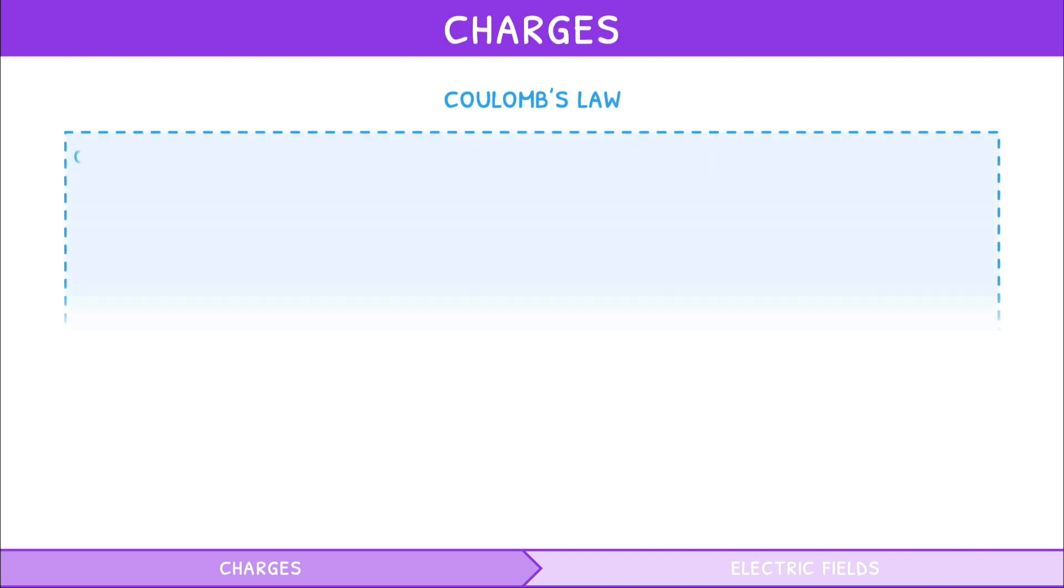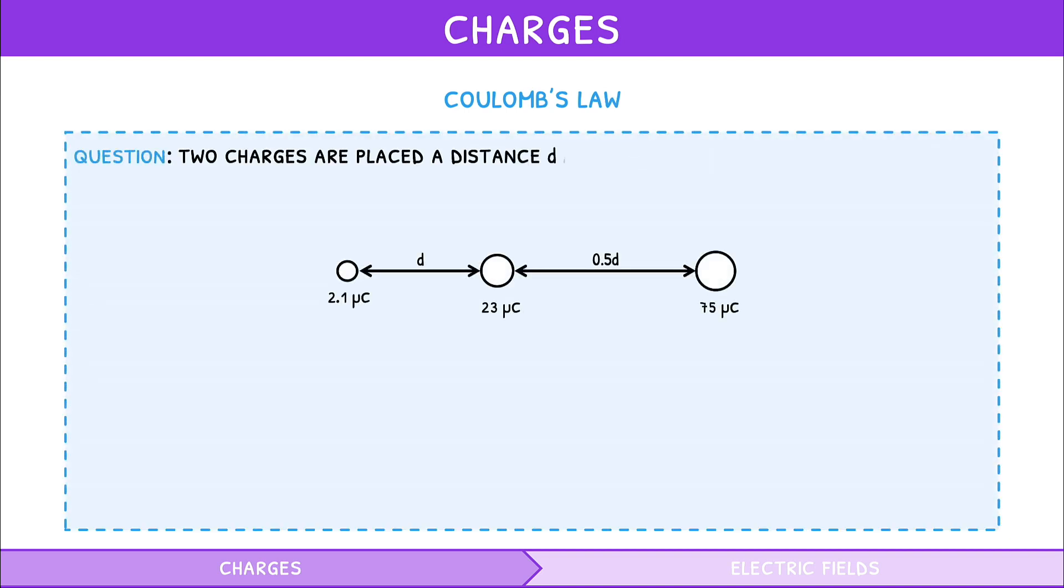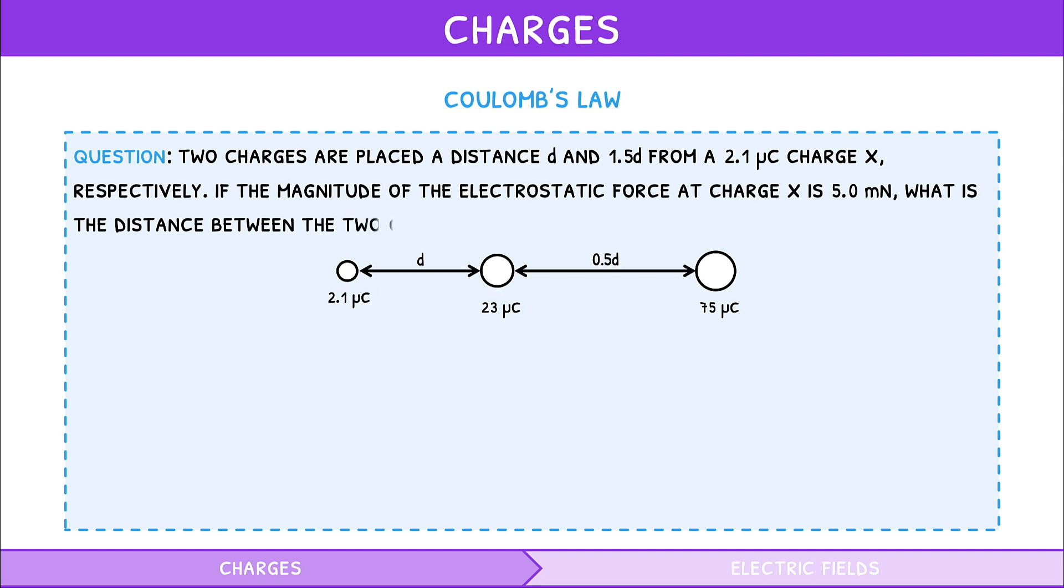Let's review with a practice question. Two charges are placed a distance d and 1.5 d from a 2.1 microcoulomb charge x, respectively. If the magnitude of the electrostatic force at the charge x is 5.0 mN, what is the distance between the two charges?